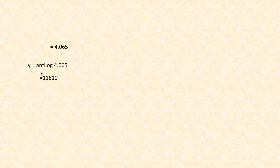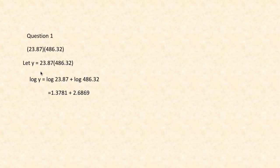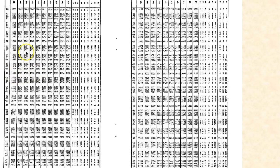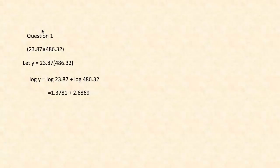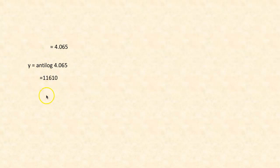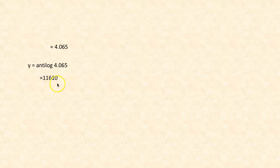So y = antilog of 4.065. Going to the antilog table, we look under 06 with column 5, which gives 1161. The digit before the decimal point is 4, so 4 plus 1 is 5 — we place the decimal point after 5 digits. Therefore y = 11610.